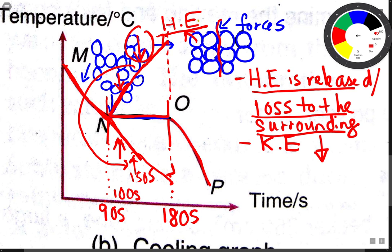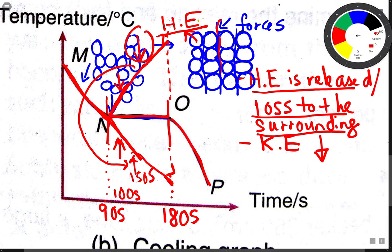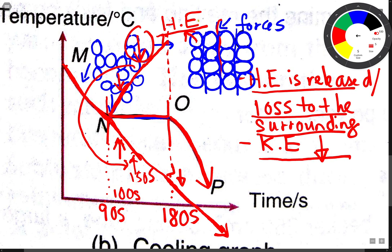When we come to 180 seconds, all the liquid particles have become solid and all the stronger forces have been formed. But heat still continues to be lost to the surrounding after 180 seconds, and that's why the temperature continues to decrease — because heat lost to the surrounding causes the kinetic energy of the particles to decrease.